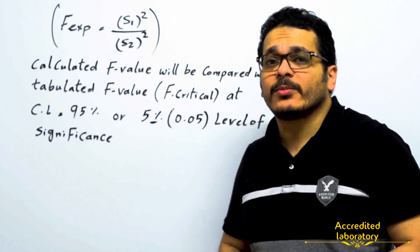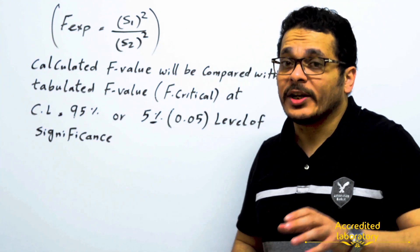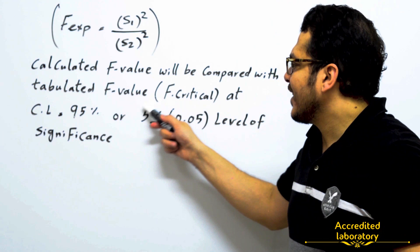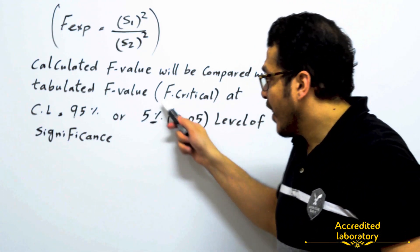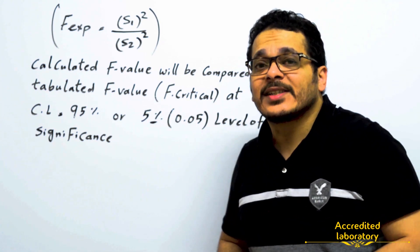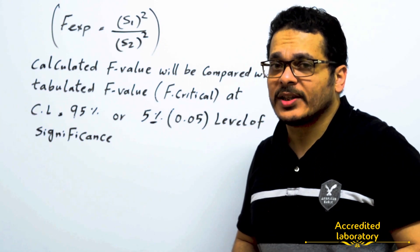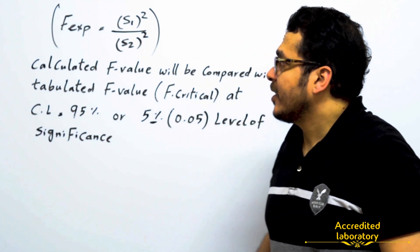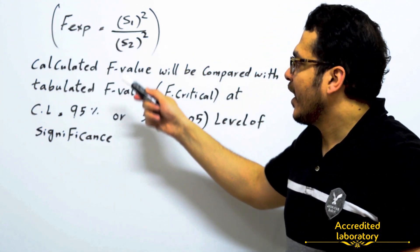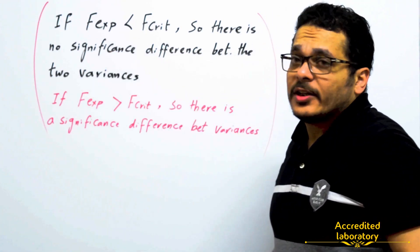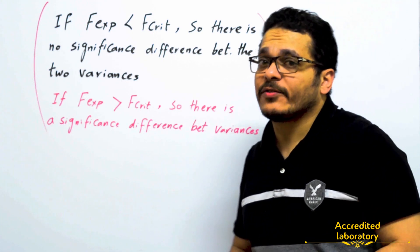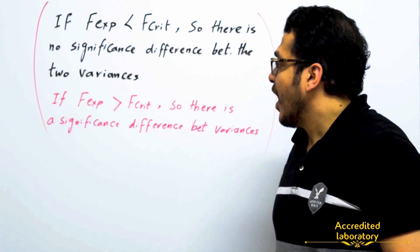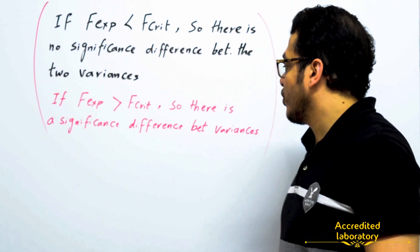The calculated F-value — F-experimental — will be compared with the tabulated F-value from the F-table, which is F-critical, at a confidence level of 95%, or a 5% level of significance. Five percent level of significance means the risk of accepted items being outside the limit is less than or equal to 5%, and the risk of rejected items being inside the limit is also less than or equal to 5%. If F-experimental is less than F-critical, there is no significant difference between the two variances. But if F-experimental is higher than F-critical, there is a significant difference.